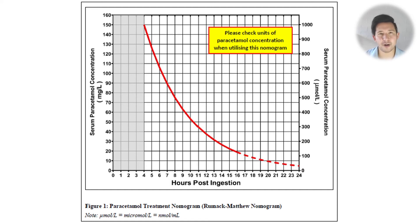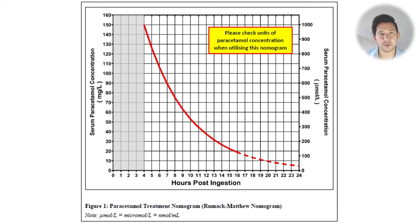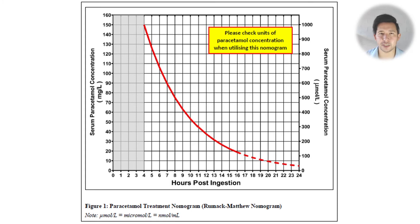The red line is essentially a threshold which defines whether patients will need N-acetylcysteine or not. So if your concentration is above the line, then you should receive NAC. If your concentration is below the line, then you probably don't need NAC.